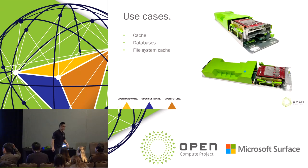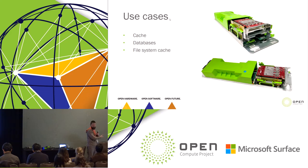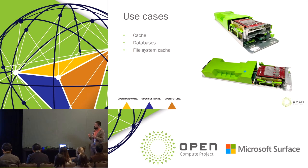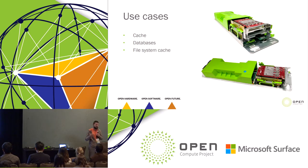I'm going to hand it off to Michael for use cases. My name is Michael Liberté, I'm in Infrastructure Product Partnerships at Facebook. We use Ava for cache, databases, and file system cache at Facebook. But out of all the large variety of offerings that Facebook contributes to OCP, I love this little thing the most.